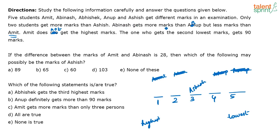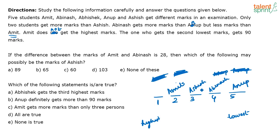Since Abhinash is ranked less than Amit and higher than Anoop, Abhinash has to be in position four, Amit in position two, and Anoop in position five. We have now fixed the positions of Amit, Ashish, Abhinash, and Anoop. The only one left is Abhishek, who gets the first rank — the highest score. So: Abhishek > Amit > Ashish > Abhinash > Anoop.